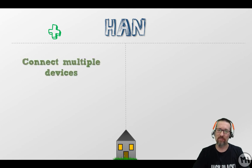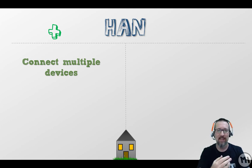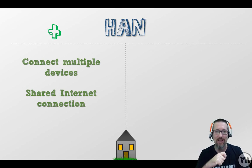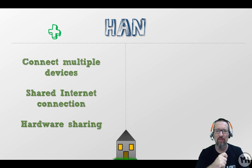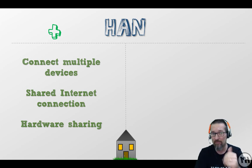Let's look at the pros and cons of a Home Area Network. Starting with the pros: a pretty good thing about having a HAN and a router is that you can connect multiple devices — all the laptops, tablets, and cell phones are connected to the one router. You have a shared internet connection, everybody can get online, and you can also share hardware. I only have one printer, but anyone in the house can print because it's a shared hardware device.